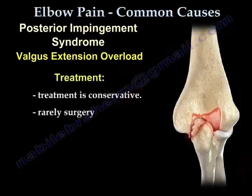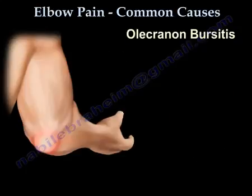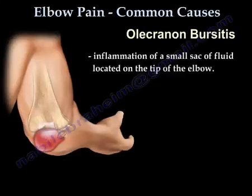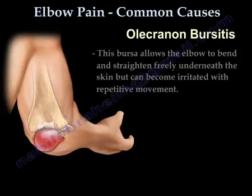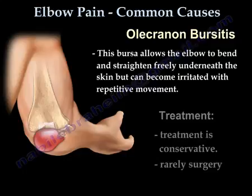Treatment is usually conservative and rarely surgery. Olecranon bursitis is an inflammation of a small sack of fluid located at the tip of the elbow. This bursa becomes irritated and inflamed with repeated motion of the elbow. Treatment is usually conservative and rarely surgery.